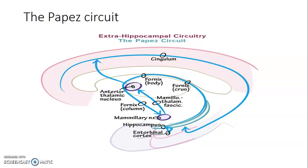So this Papez circuit is very important and you need to remember it. The entorhinal cortex communicates with the hippocampus, which communicates via the fimbria of the fornix to the posterior columns, the body of the fornix, then to the anterior columns of the fornix, which take information to the mammillary nuclei of the hypothalamus. Through the mammillothalamic tract, information travels from the mammillary body to the anterior nucleus of the thalamus, and from the thalamus to the cingulum within the cingulate gyrus, which brings the information back to the hippocampus.